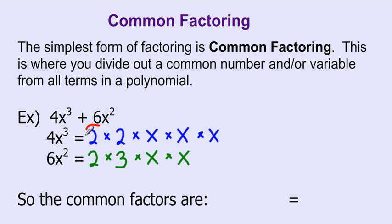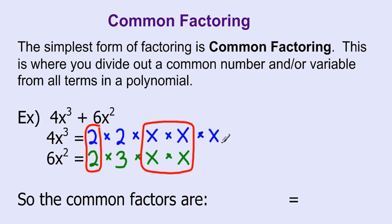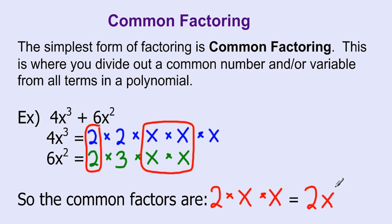I see we have a 2 that's common. I have a 3 in 6x squared but not in 4x cubed, so that's not common. And I have a second 2 in 4x cubed but not in 6x squared, so those aren't common either. I do see that I have 2 x's in each, and then this extra x is left over. So the common factors are: a 2, an x, and another x.